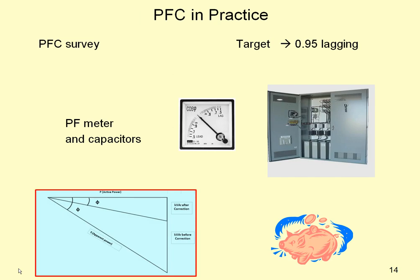So, what do we do in practice? We conduct a power factor correction survey, with targets to improve the power factor to greater than 0.95. We install a power factor meter and capacitors. And at the end of the day, we save money. On the bottom left hand side, we see a summary of the situation to reduce the apparent power.